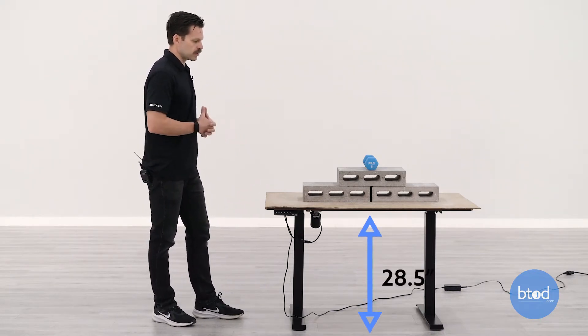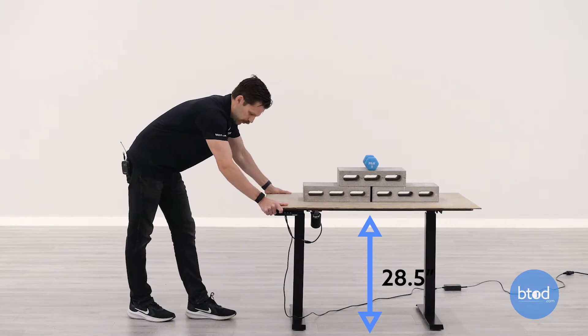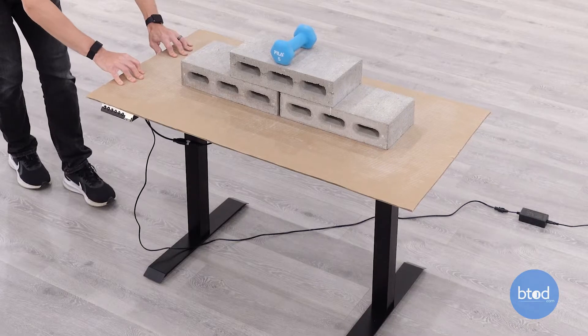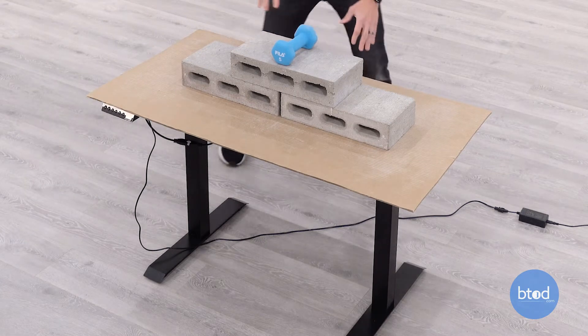So again, we're at the bottom height here, just a little bit over 28 inches. We're going to check the wobble first, and you can see at the bottom with the Fezibo, it isn't good. We'll just say that.